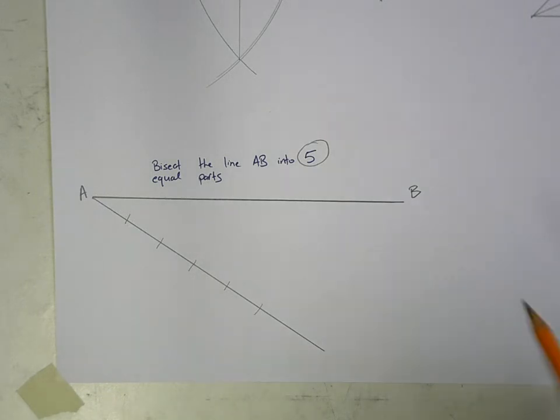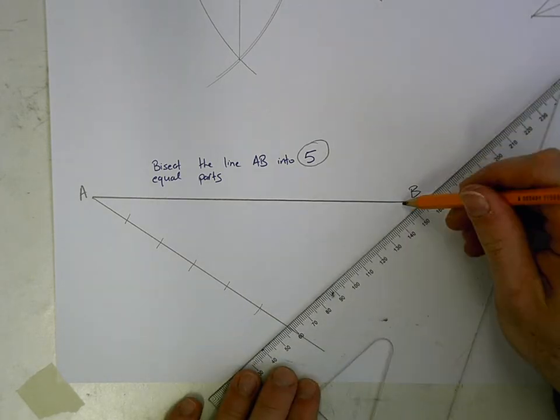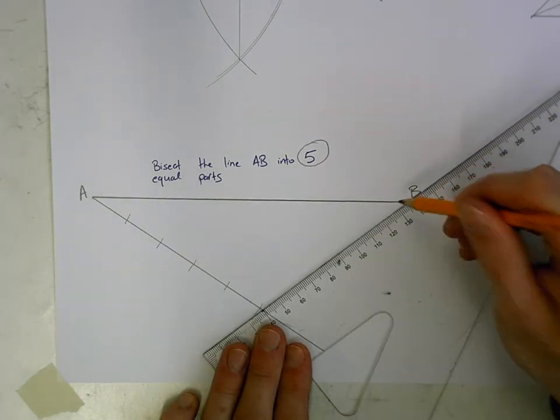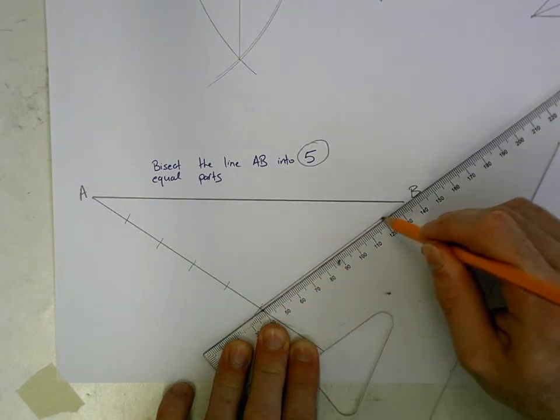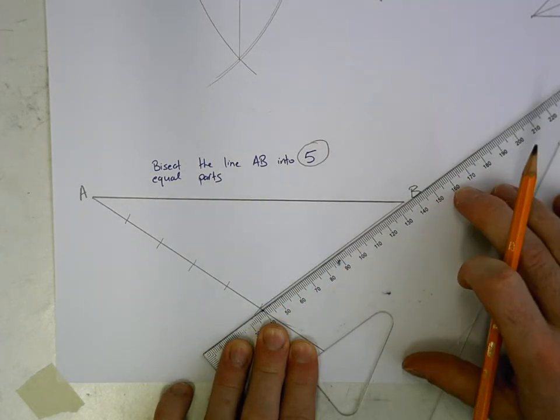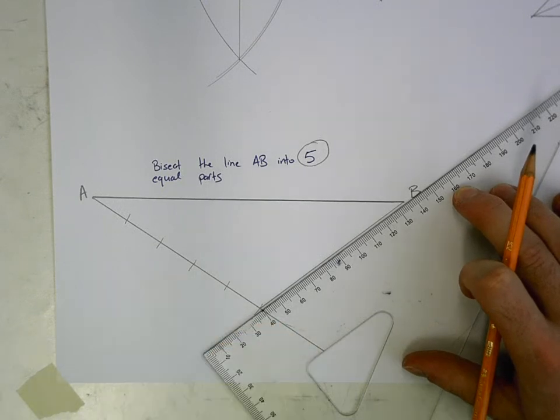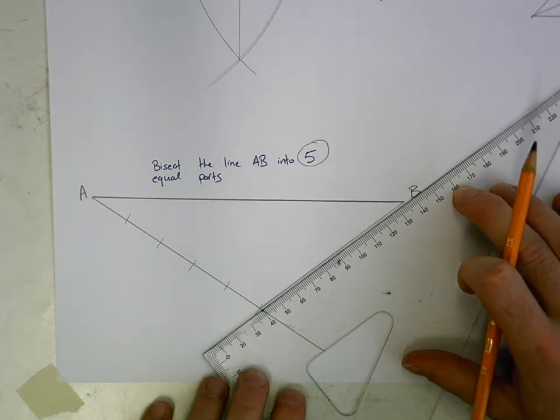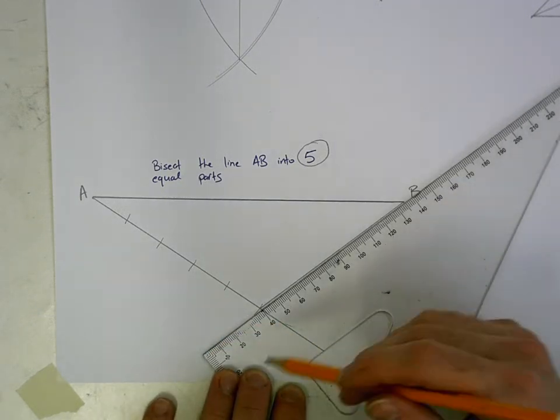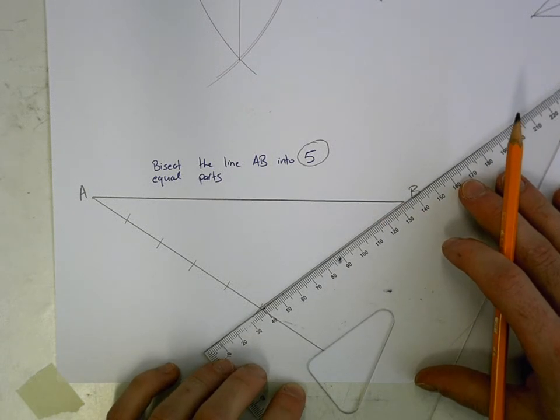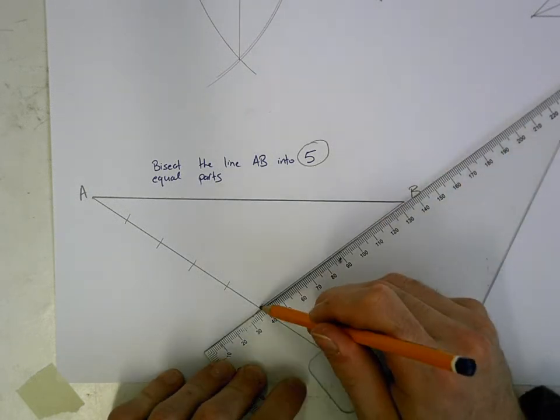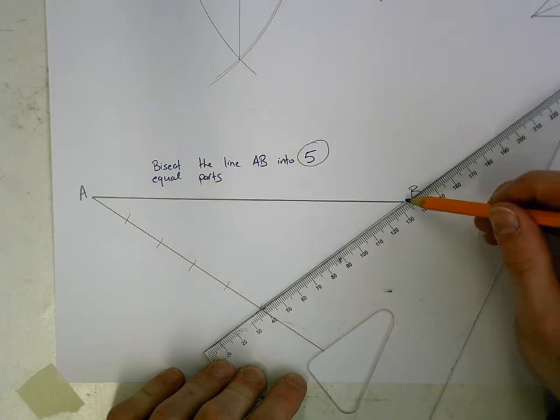What we then have to do is go to the very last one that I marked off, so the fifth one, and join it back to the end of my line AB. So the end of that is point B. Now try and hold your set squares in a similar position that I am, lads, just so you can kind of follow it. So the very last point that I marked off, the fifth one, join it back to point B.